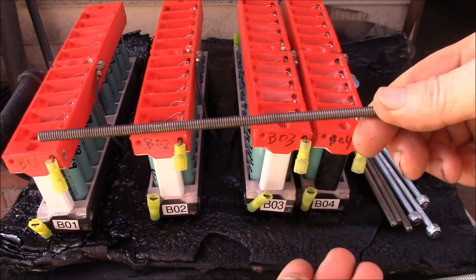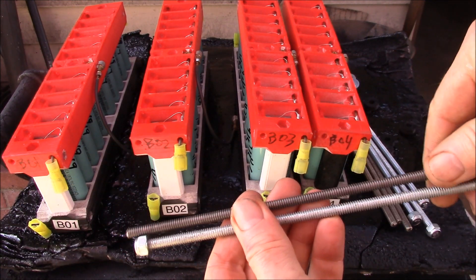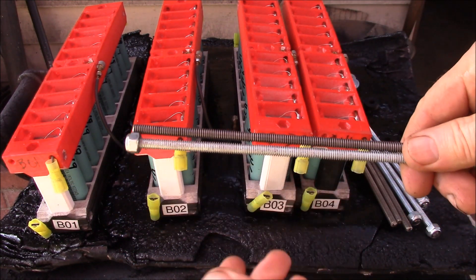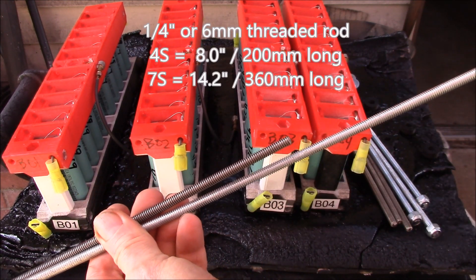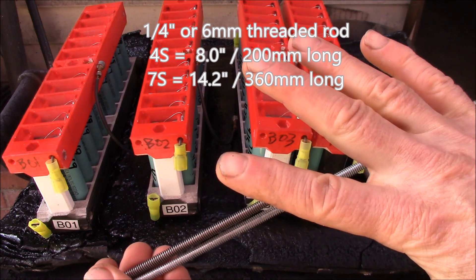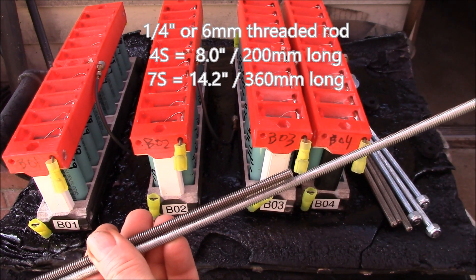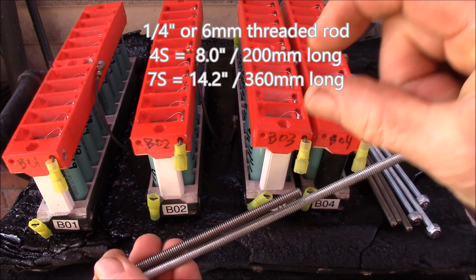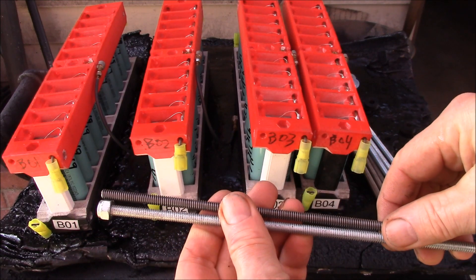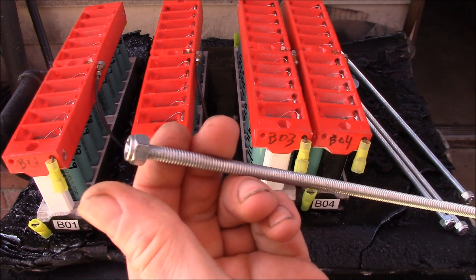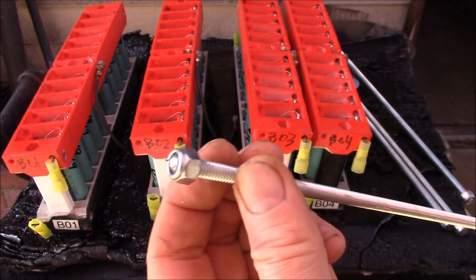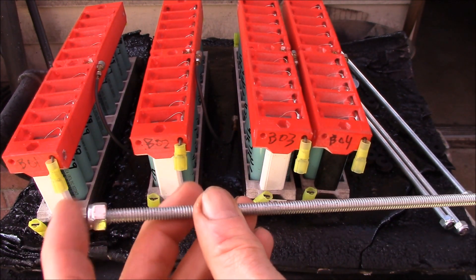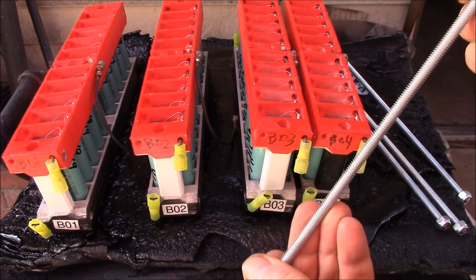So let me go get the threaded rods and we'll start putting these back together. Okay there's the threaded rods for the 4s packs, I think they're a little over eight inches long, and then here's the ones for the 7s. I can get five of these out of a six foot piece and I just have an inch left over so it's pretty efficient.